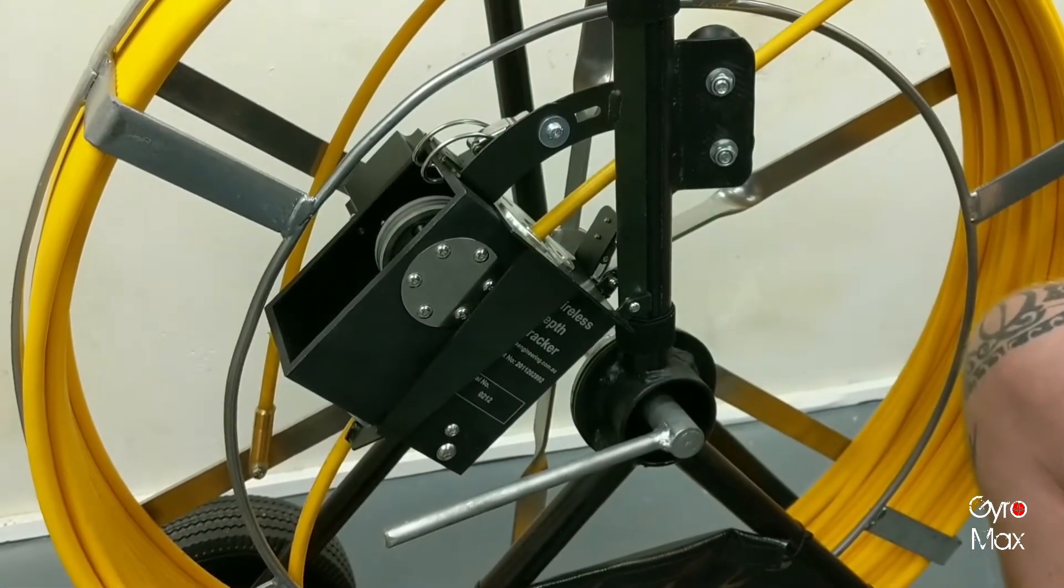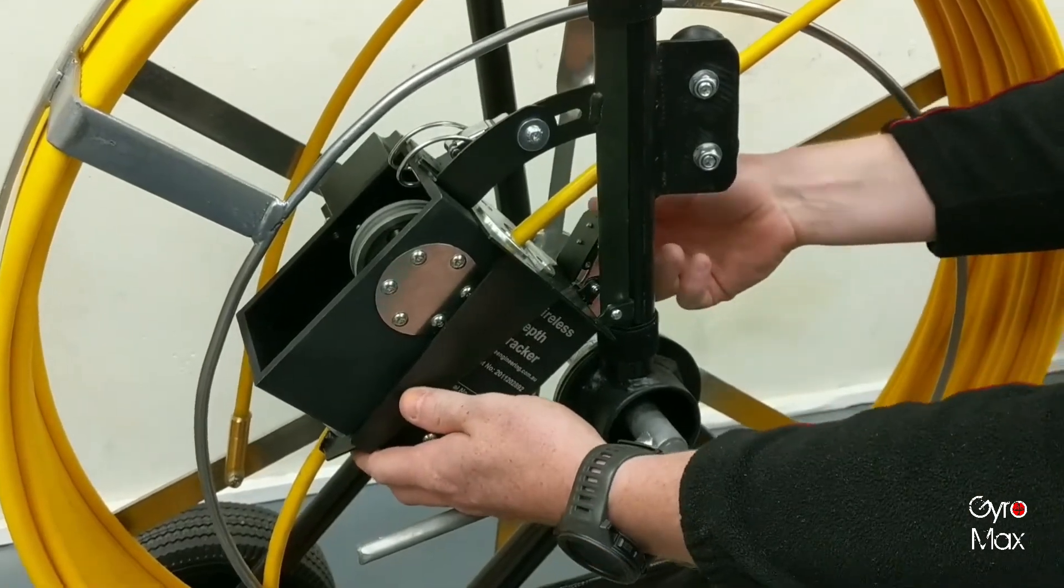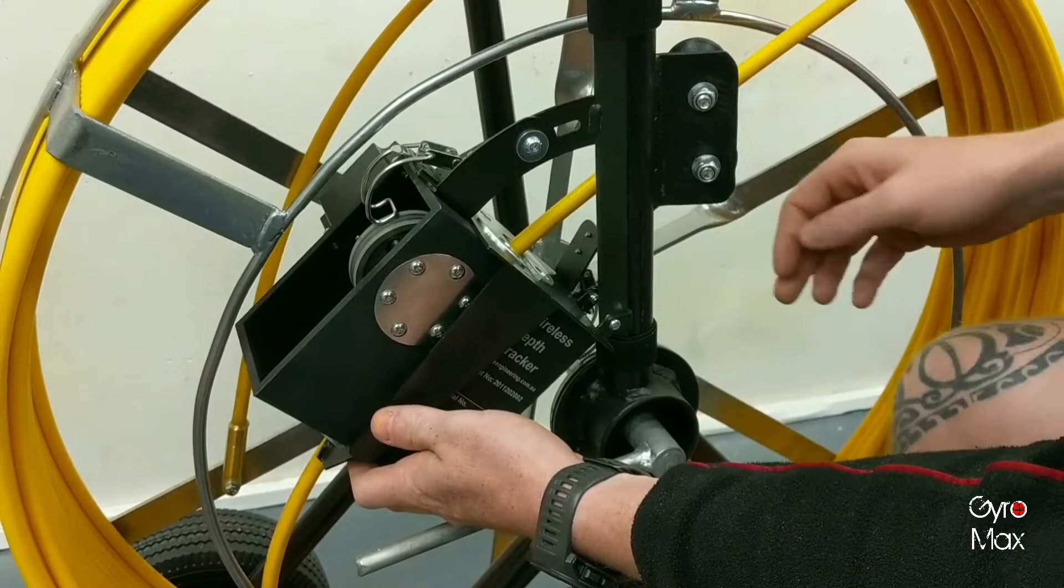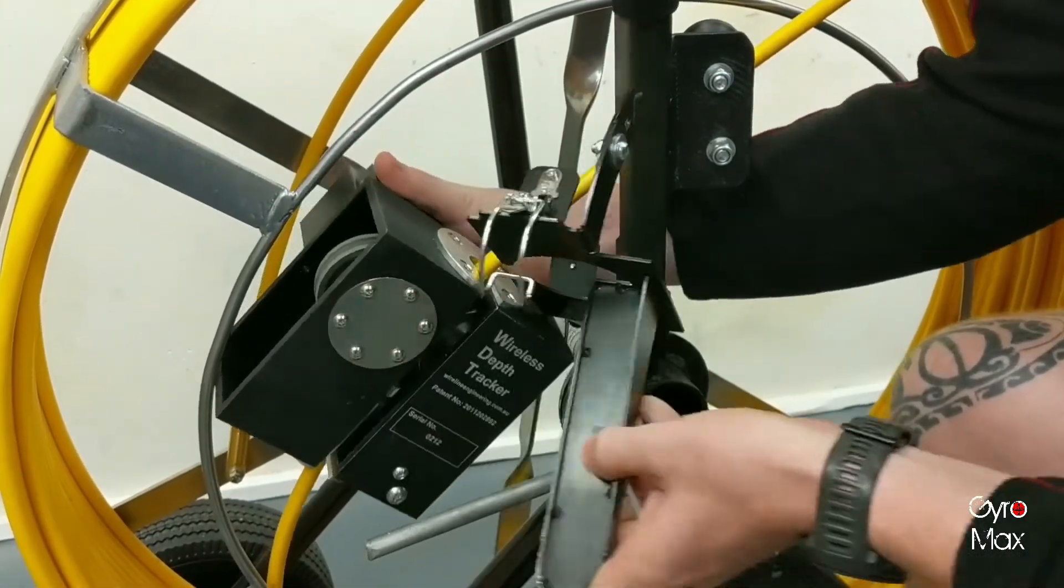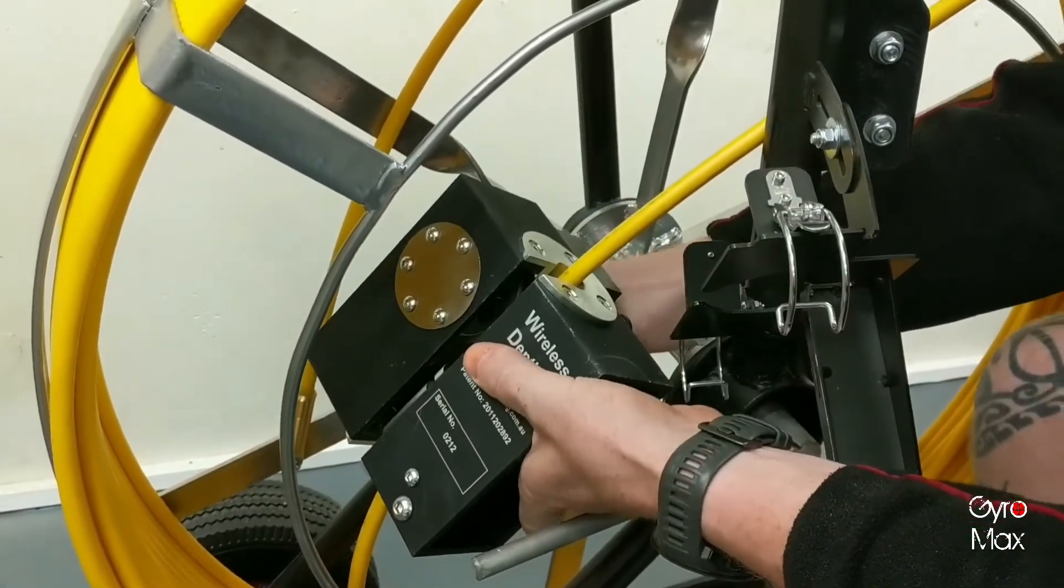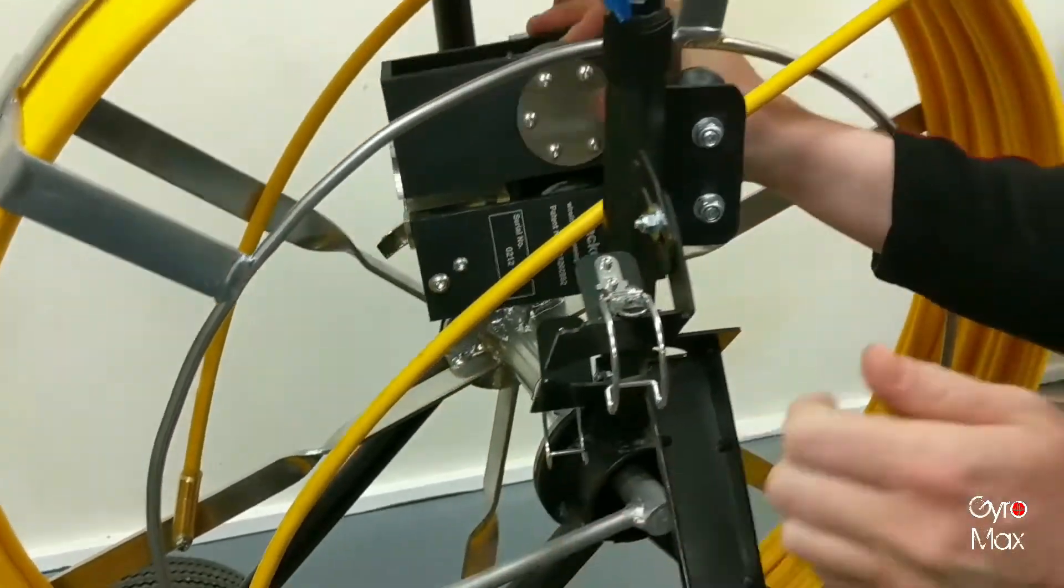To release the bracket, it's the same as how you put it on. Release the clamp at the bottom, then the clamp at the top. Slide the WDT down, pull the bracket out, turn the WDT upside down again, release the clamp, slide it back out, and pull it back out to the front.